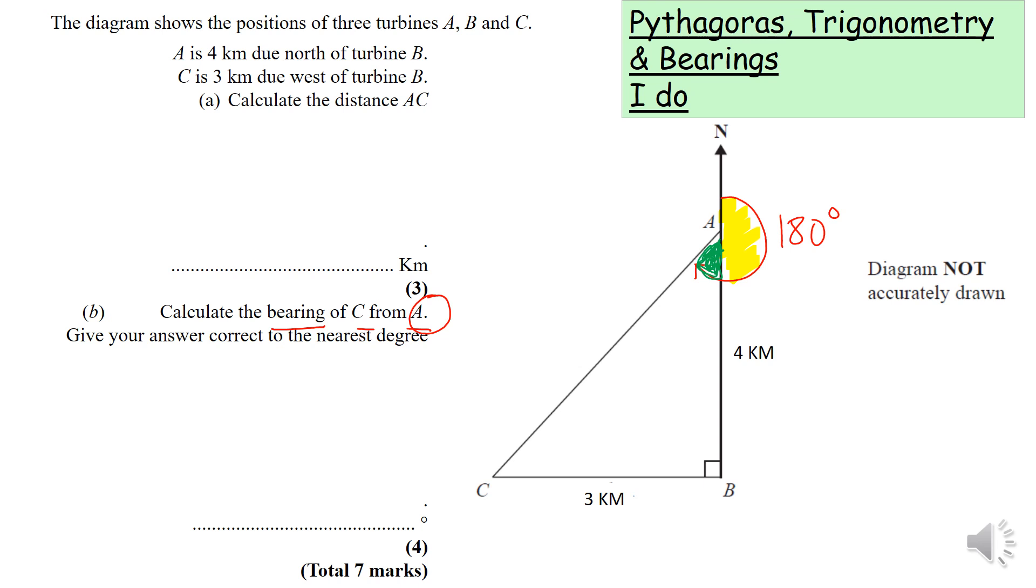What is our three formula triangles? SOHCAHTOA. Let's pop them down. Three formula triangles: sine of the angle equals opposite over hypotenuse, cos of the angle is adjacent over hypotenuse, and tan of the angle is opposite over adjacent.